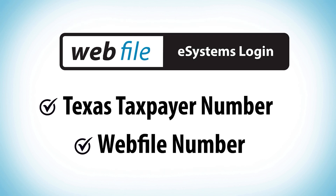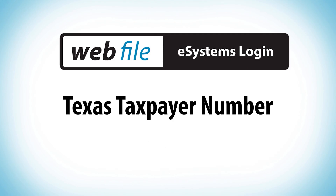Now that you have your 11-digit Texas taxpayer number and the web file number of the tax type you would like to manage, you're ready to authenticate access in your eSystems profile. Check the video description for a link to that tutorial. If you're still missing one or both of these numbers, the rest of this video will show you alternate retrieval methods. Feel free to use the timestamps in the video description to skip ahead to the information you need.